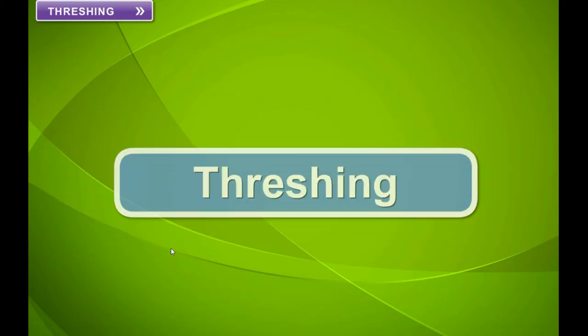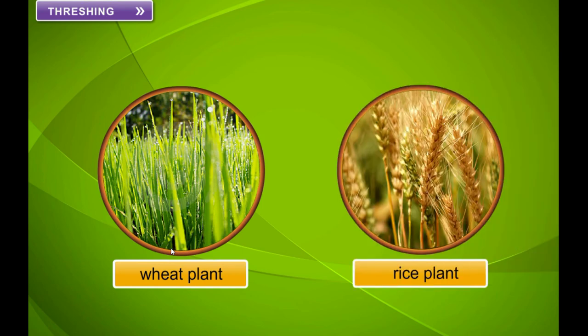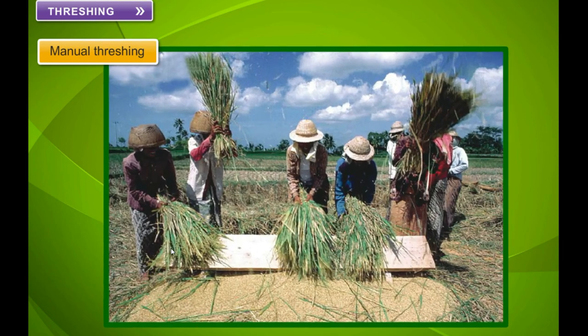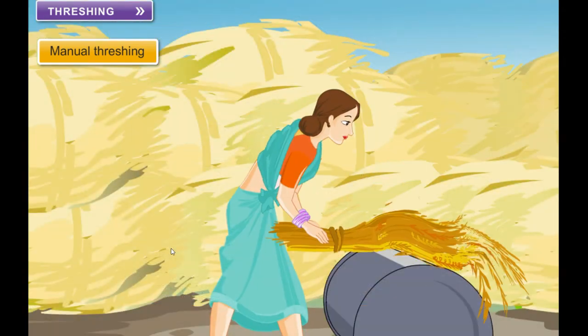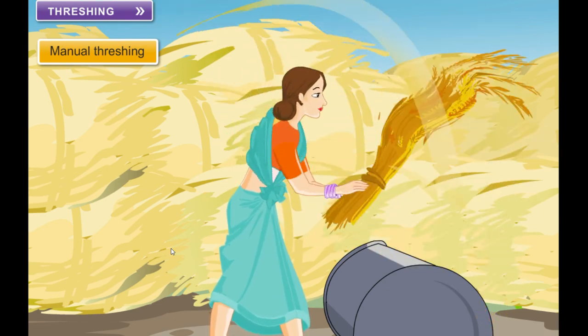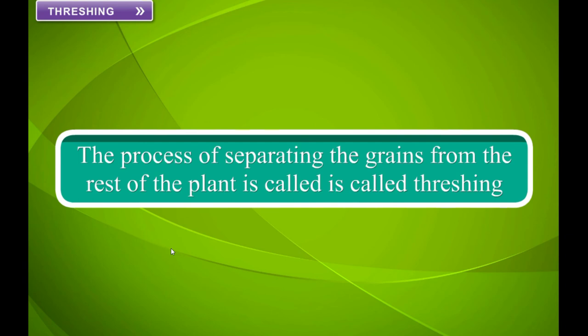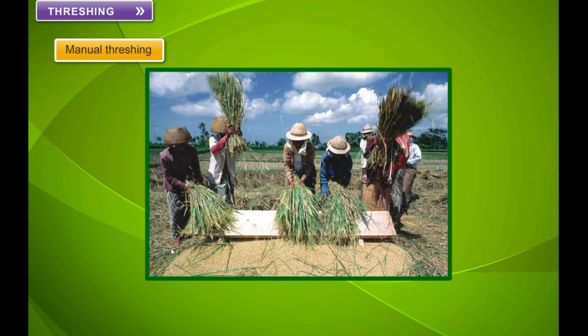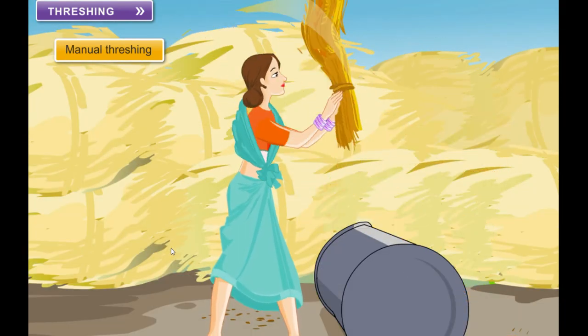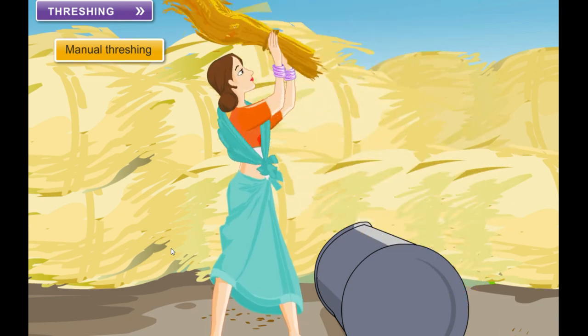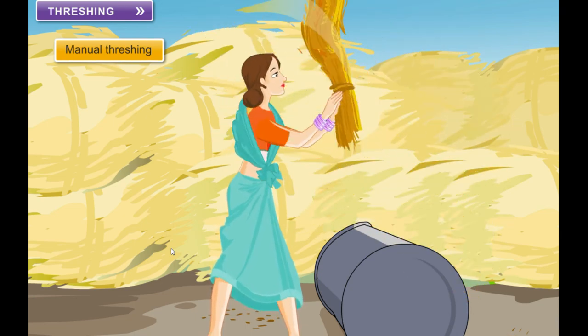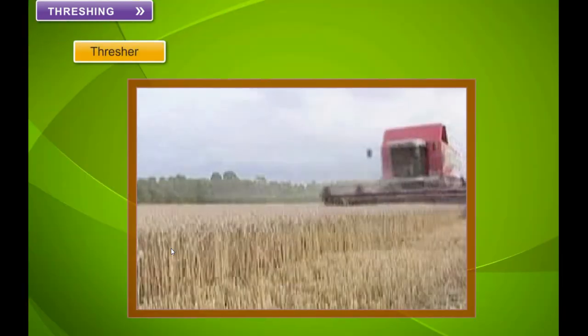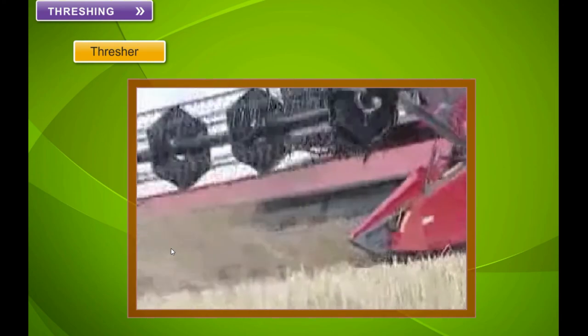Threshing: cereals like wheat and rice are a source of food for us. After harvesting these food crops, the grains need to be separated from the rest of the plant by the process of threshing. In manual threshing, the farmer holds a pile of crop and hits it against a rock or hard surface to separate the grains. Threshing can also be done by a machine called a thresher or by a combine harvester.